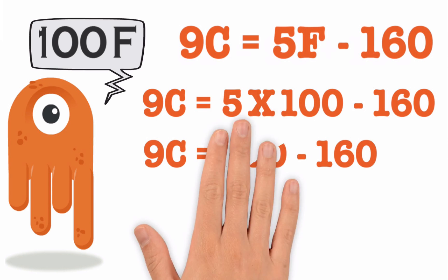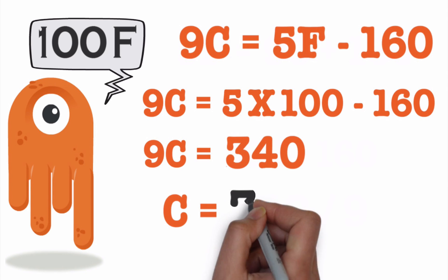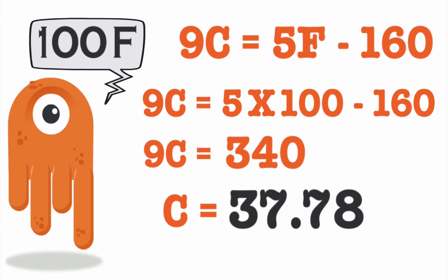So we have 9C equals 340, or C equals 340 divided by 9, which is 37.78. So 100 degrees Fahrenheit is 37.78 degrees Celsius.